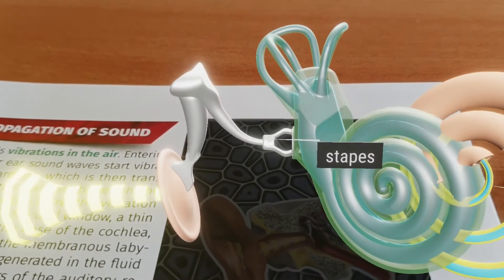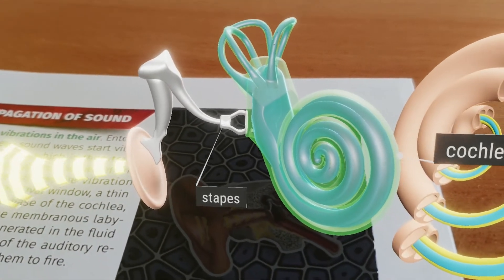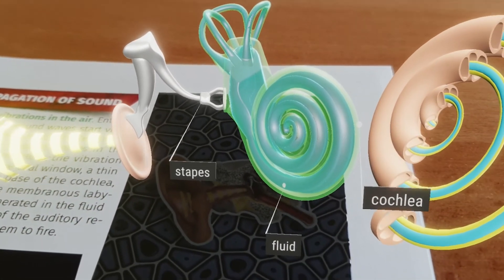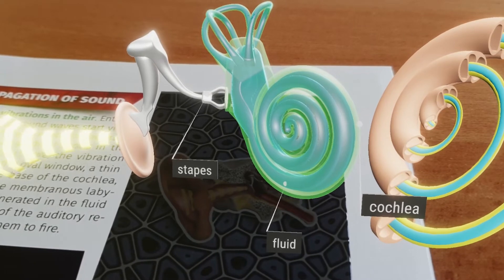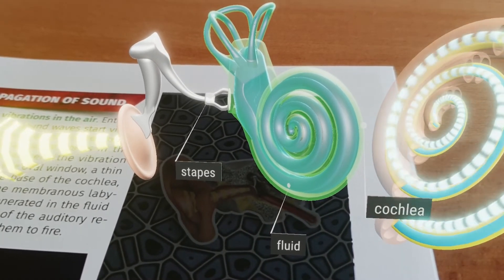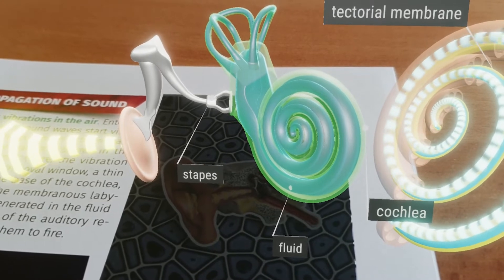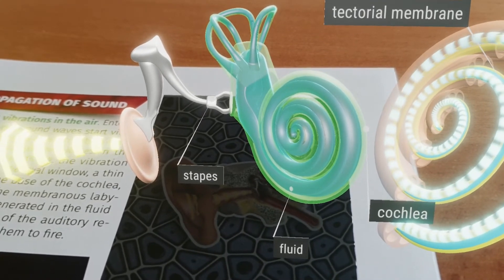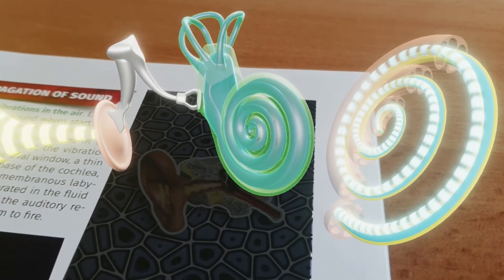The oscillating movement of the stapes spreads to the fluid-filled cochlea comprising a bony and a membranous labyrinth. As a result of the vibration propagating in the cochlea, the tectorial membrane is pressed against the sensitive hair cells, displacing them.